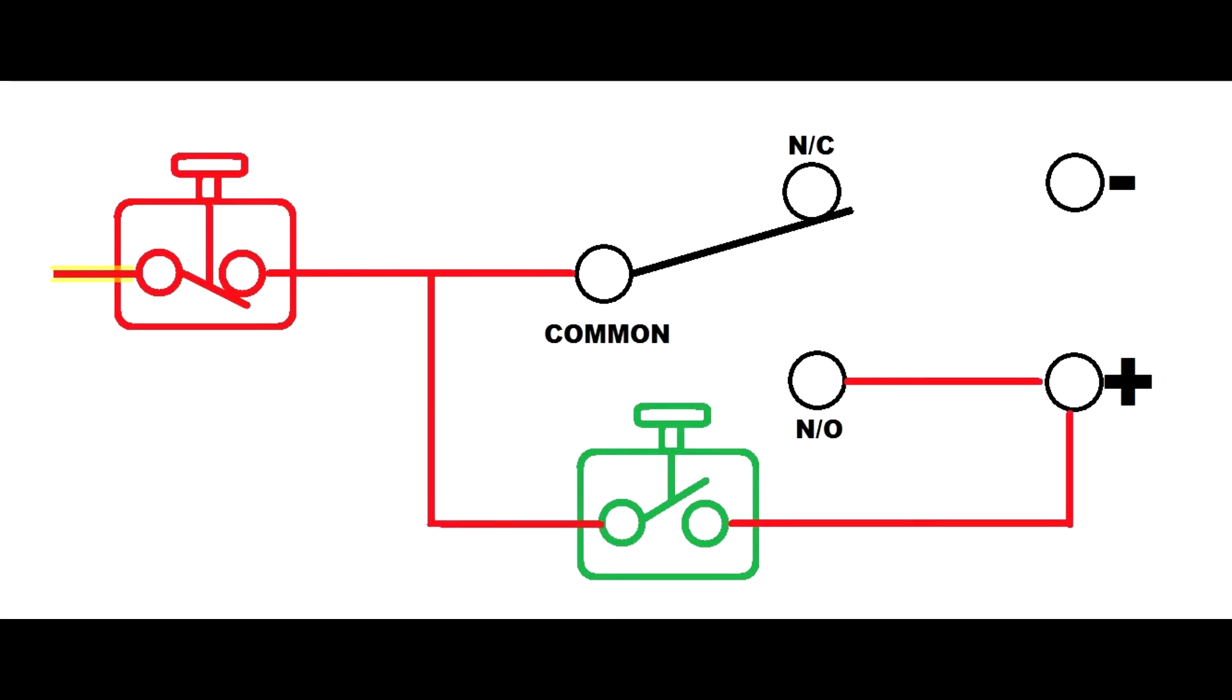Continuing on, we have the positive leg from the power supply running through the normally closed switch, a.k.a. our stop switch, and it's landing on the common of the relay. We also have that positive leg running to one side of the normally open switch, a.k.a. the start button.